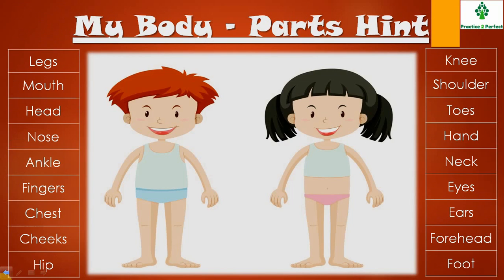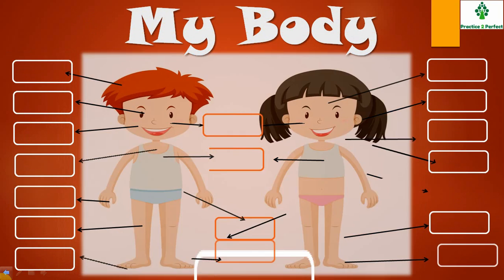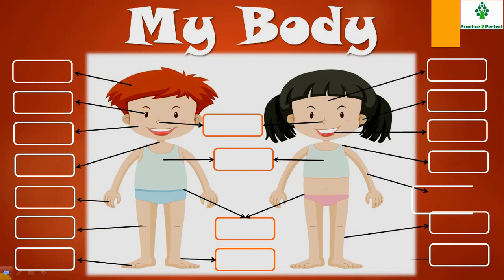These are the help words for the body parts. Look at the picture and use the help words given to label the different body parts. By doing this exercise you learn the names of different body parts.